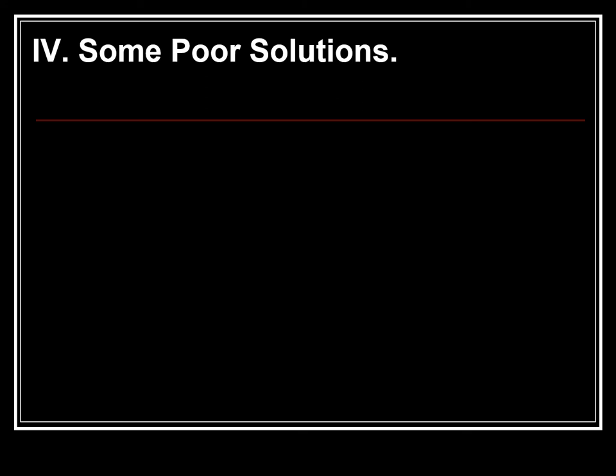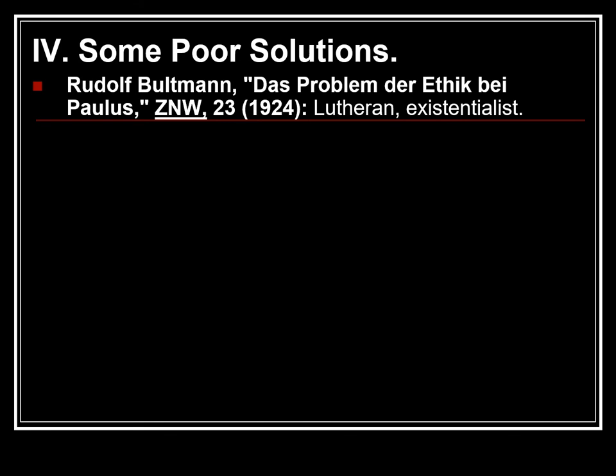As we look at this issue in terms of scholarship, we're going to find some very poor solutions to this problem of indicative and imperative. The person who gave us this language of indicative and imperative is Rudolf Bultmann. His theology was regularly off-base. His liberal Lutheranism was combined with his existential philosophy and it led to all sorts of distortions of reading the scriptures.